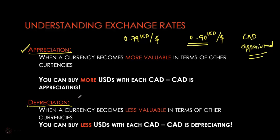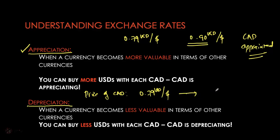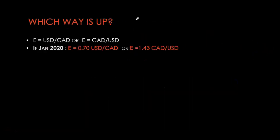Depreciation is the exact opposite of appreciation — when a currency loses value it is called a depreciation. In terms of the price of the Canadian dollar, a depreciation means the Canadian dollar is now cheaper, so instead of giving up 79 cents US you only have to give up 69 cents US. The exchange rate is the price of one currency in terms of the other, and it can be expressed either way — as US dollars per Canadian dollar or Canadian dollars per US dollar.